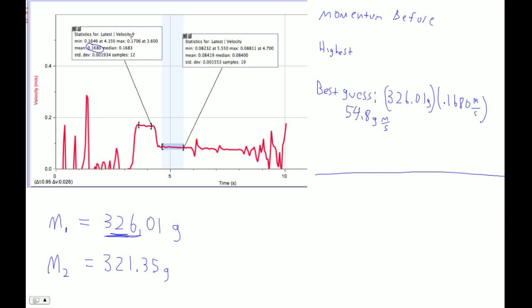Now, if I want to get the highest it could have been, all I'm going to use is I'm going to use this maximum velocity right there. OK, so I'm going to go 326.01 times .1706. And that's, of course, still grams, and that's meters per second. Be sure you're good about your units. So let's go second entry, and that's .1706. And I get 55.6. Could have been as high as 55.6, and that's gram meters per second.